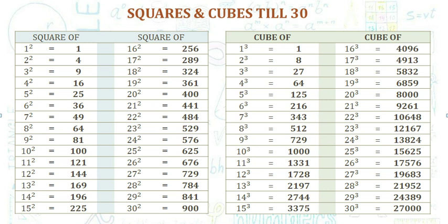25 square 625, 26 square 676, 27 square 729, 28 square 784, 29 square 841, 30 square 900.